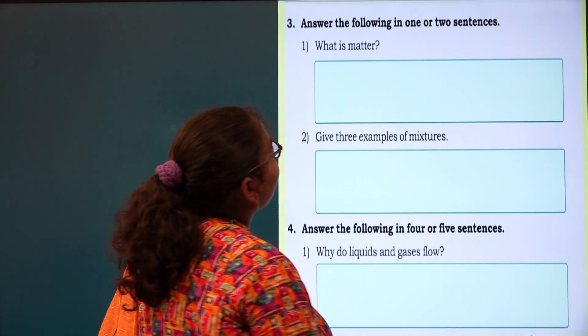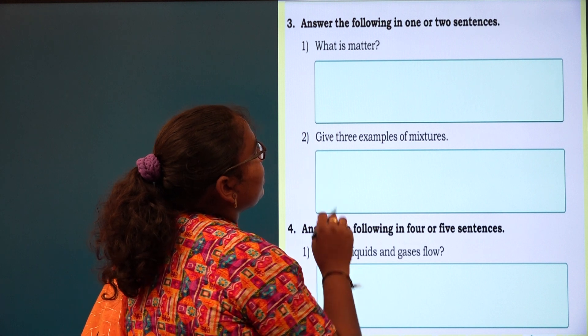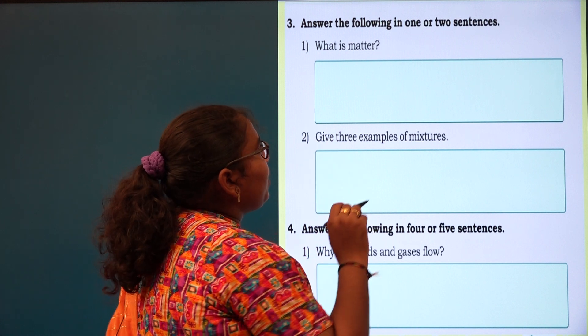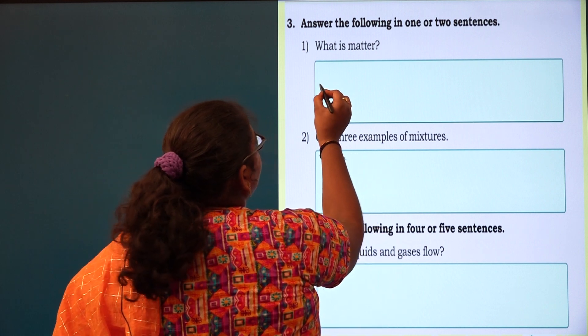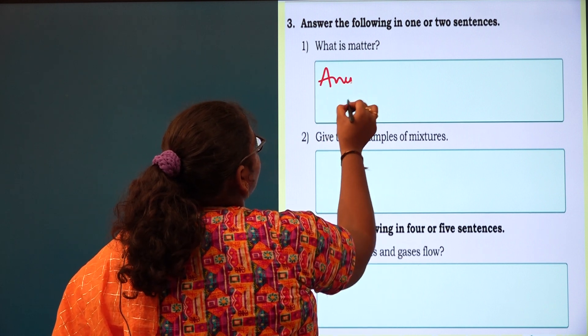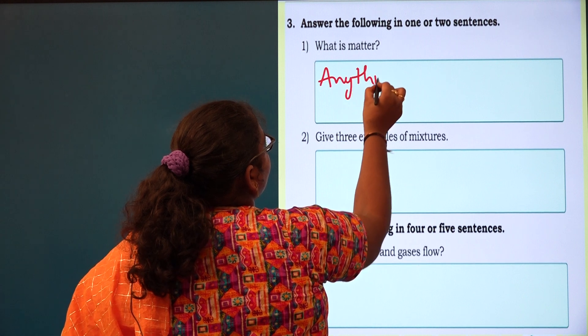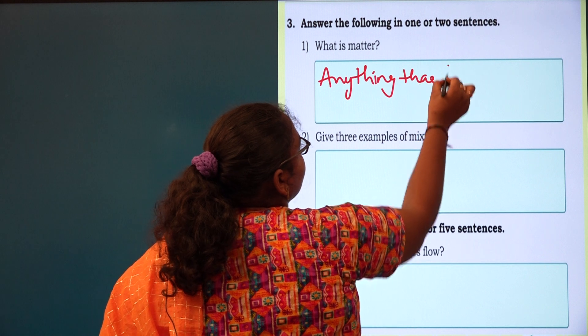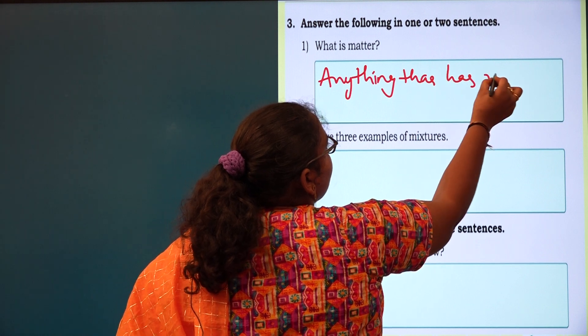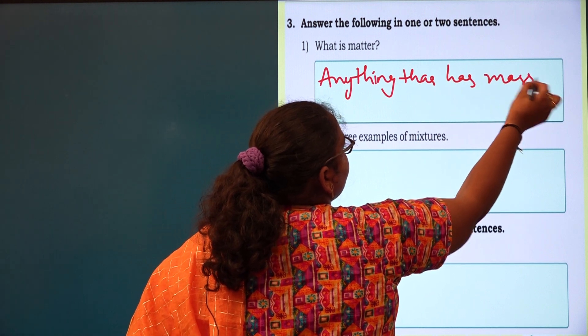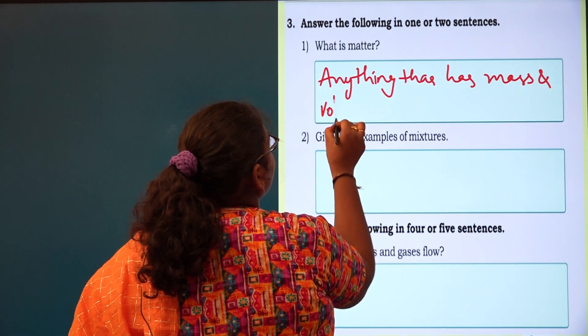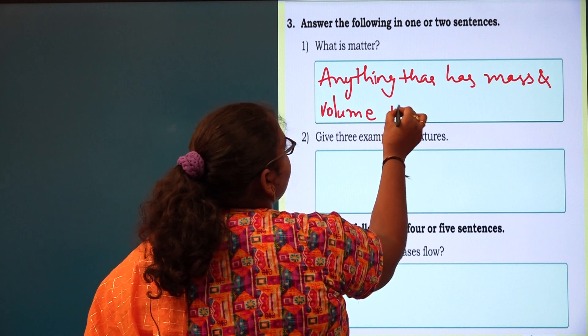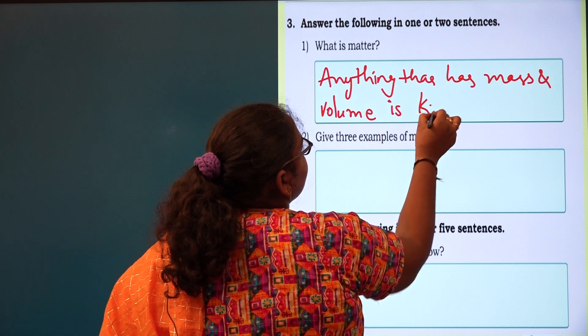Coming to the third one, answer the following in one or two sentences. First one: what is matter? Anything that has mass and volume is known as matter.